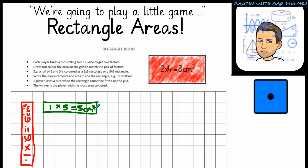If you roll the die, you get two big factors, and there's no more room on the sheet to fit it in, then you lose your turn, and the play passes to the next player. The winner is the player with the most area coloured, so you can add all of your areas of rectangles up.